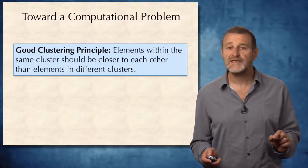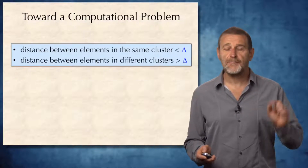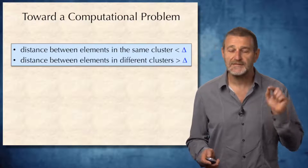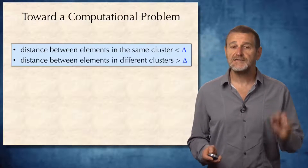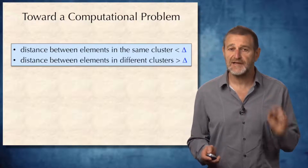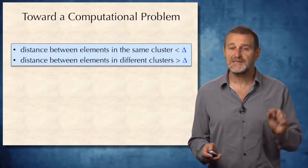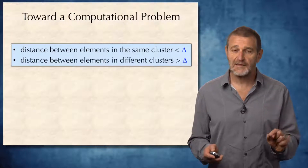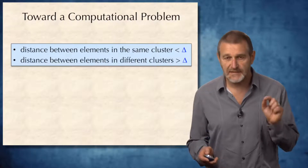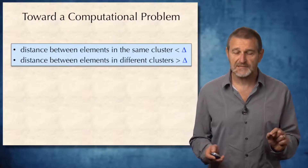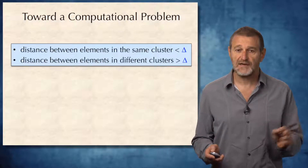In other words, there should be a parameter delta such that the distance between elements in the same cluster is less than delta, and the distance between elements in different clusters is larger than delta.